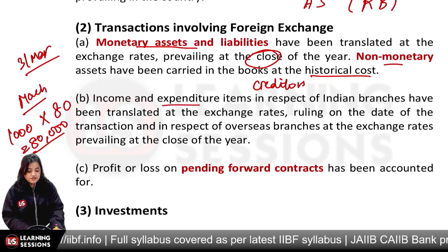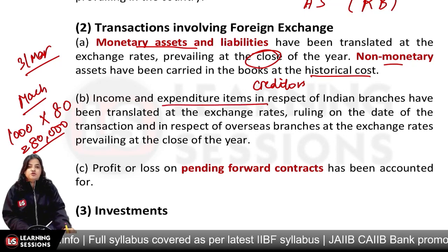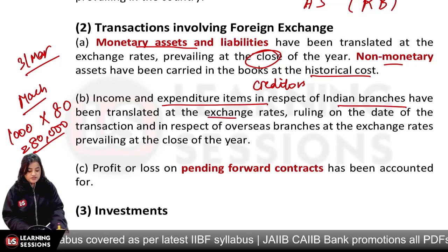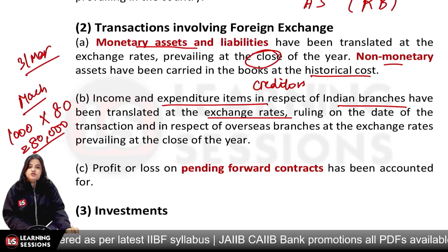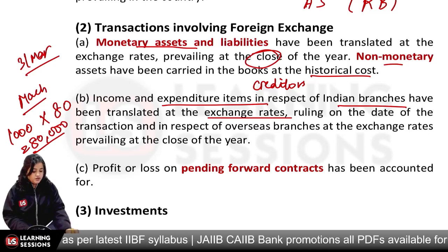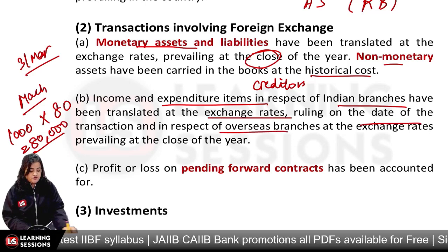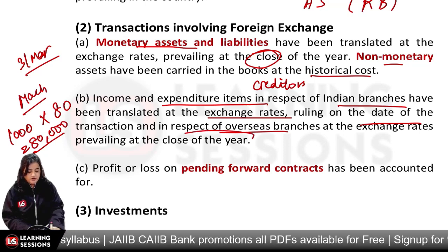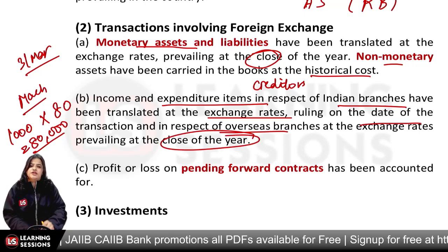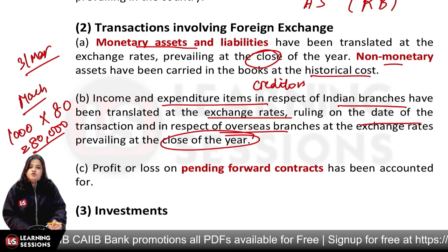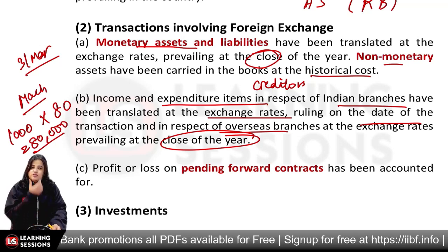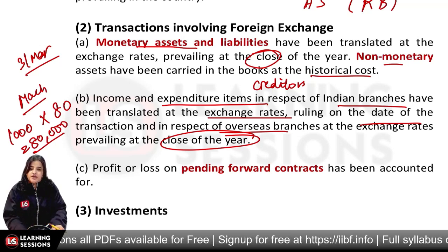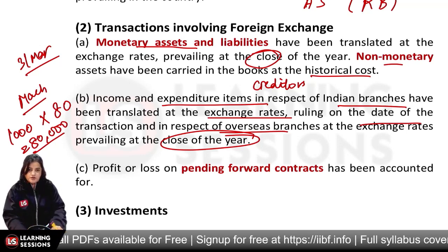Then we have income and expenditure for our Indian branches which are converted at the foreign exchange rate ruling on the date of the transaction. In respect of overseas branches, we use the exchange rate prevailing at the close of the year. So for Indian branches, we convert on the transaction date; for overseas branches, we convert at year-end.